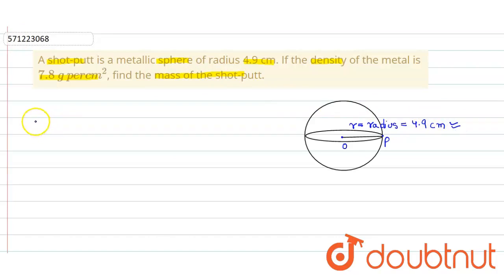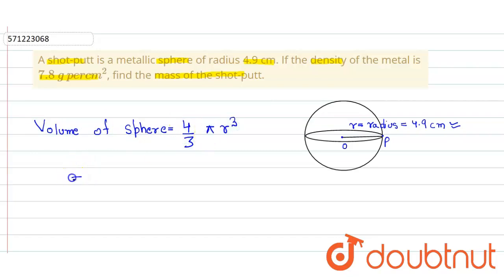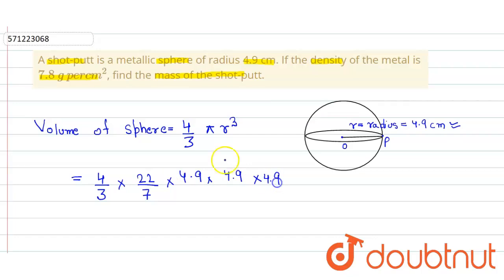First we have to calculate the volume in order to find out the mass. The volume of a sphere is equal to 4/3 π r³. So here it is equal to 4/3 into π into 4.9 into 4.9 into 4.9 into 4.9.